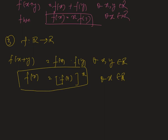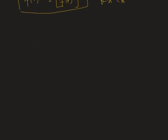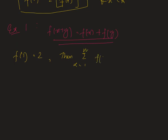Now with an example we try to understand these results more clearly. Example one: Let f be a real-valued function satisfying f(x + y) = f(x) + f(y), and f(1) = 2. Then we need to find the value of the sum over k = 1 to n of f(k).